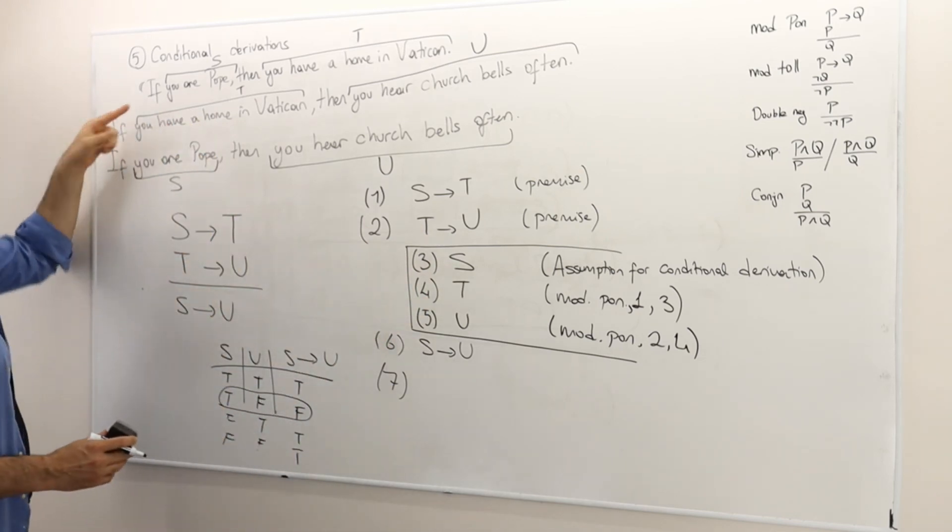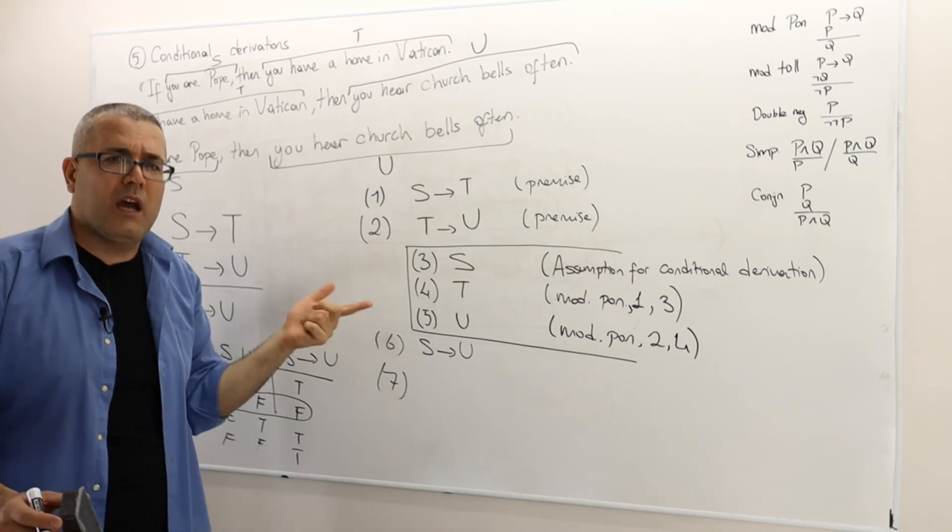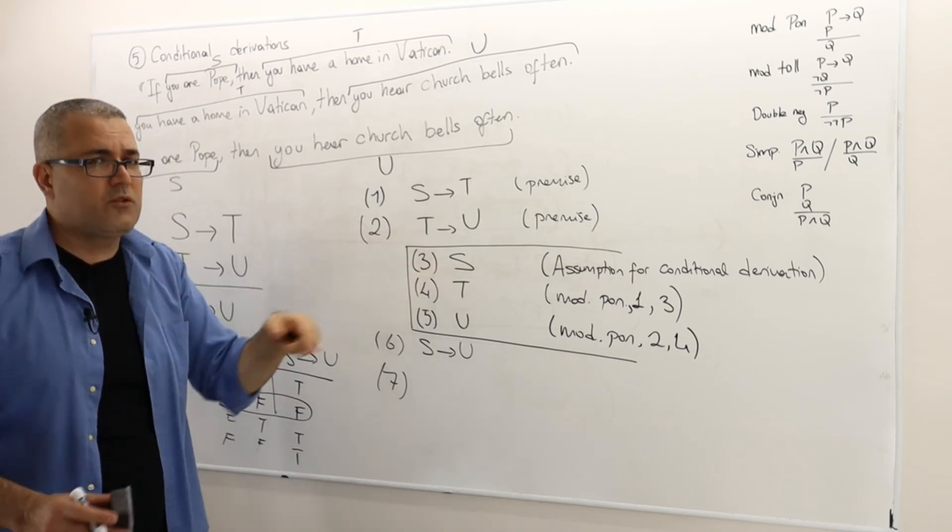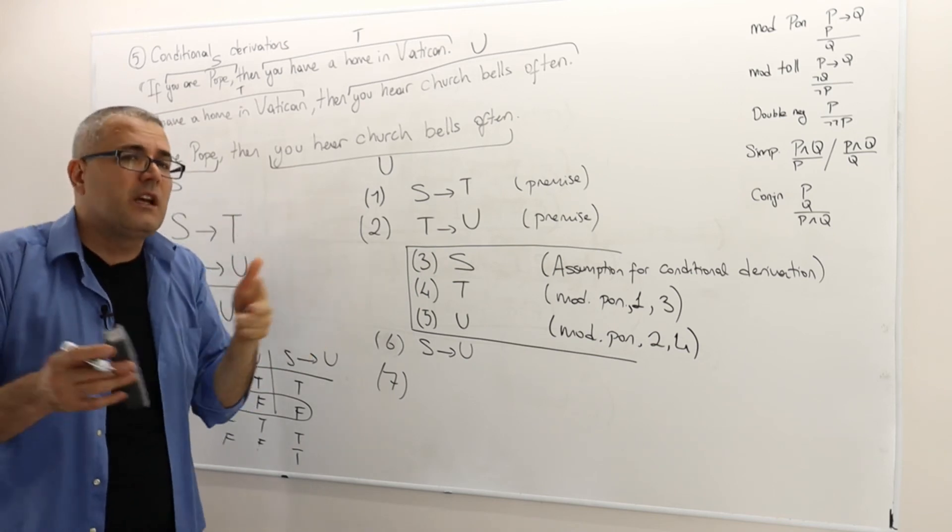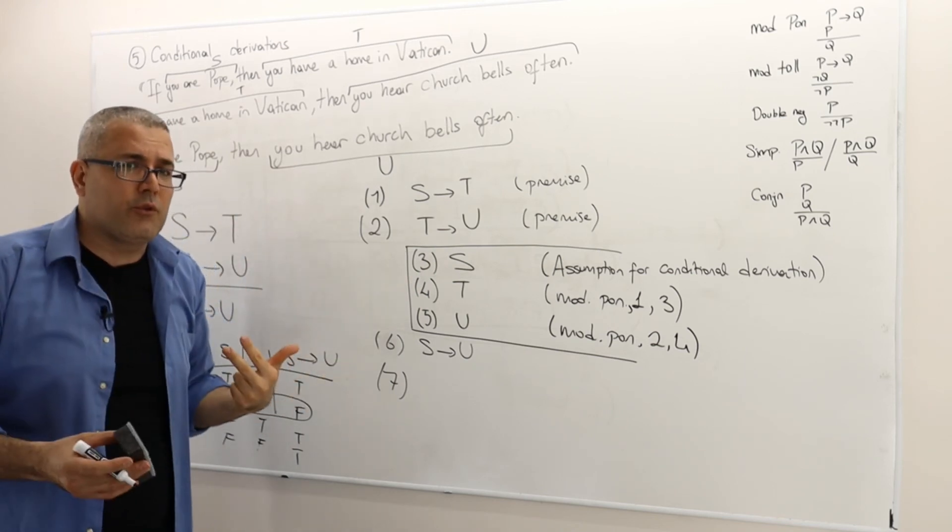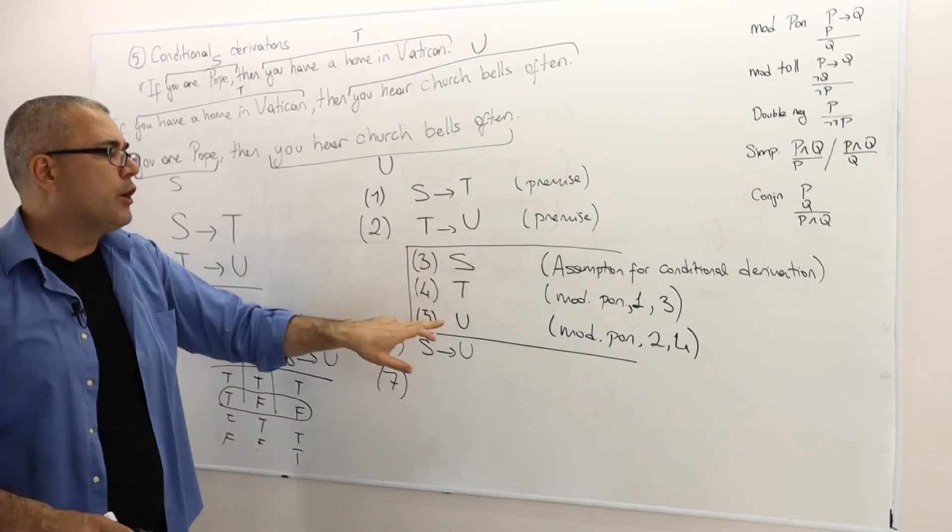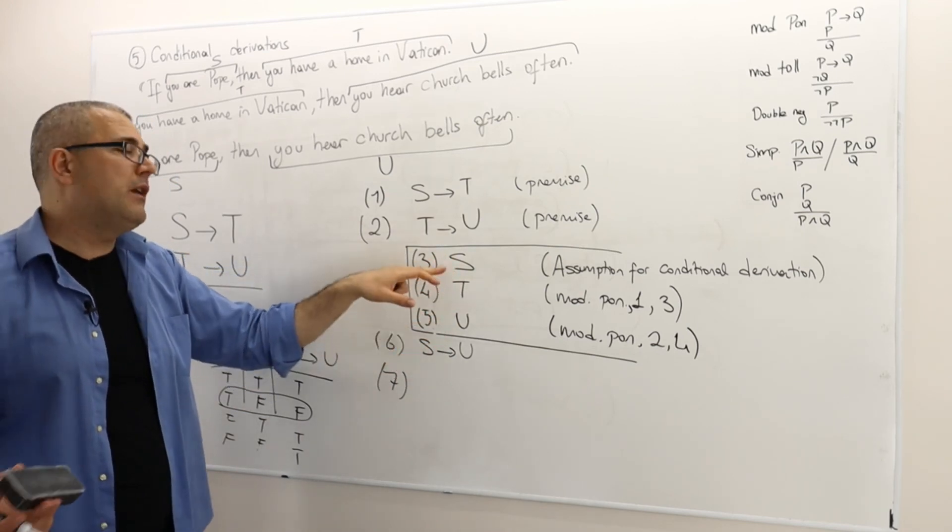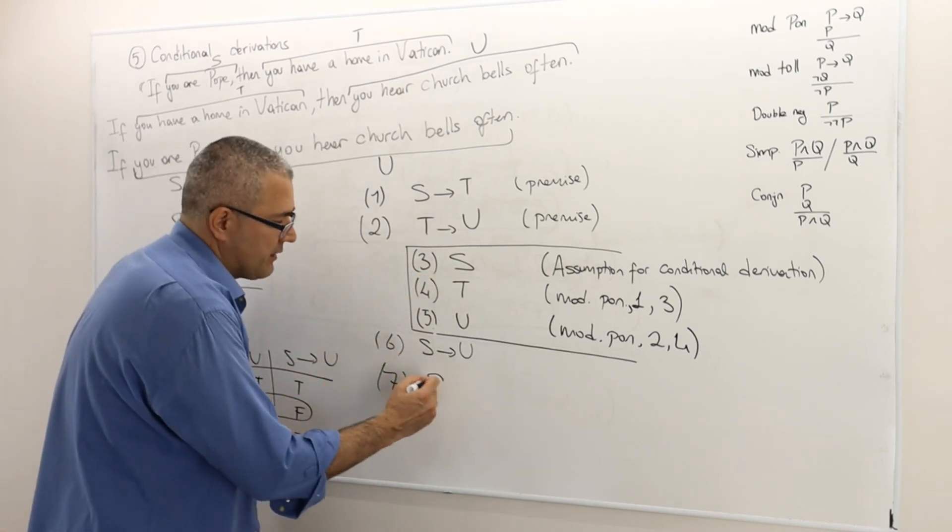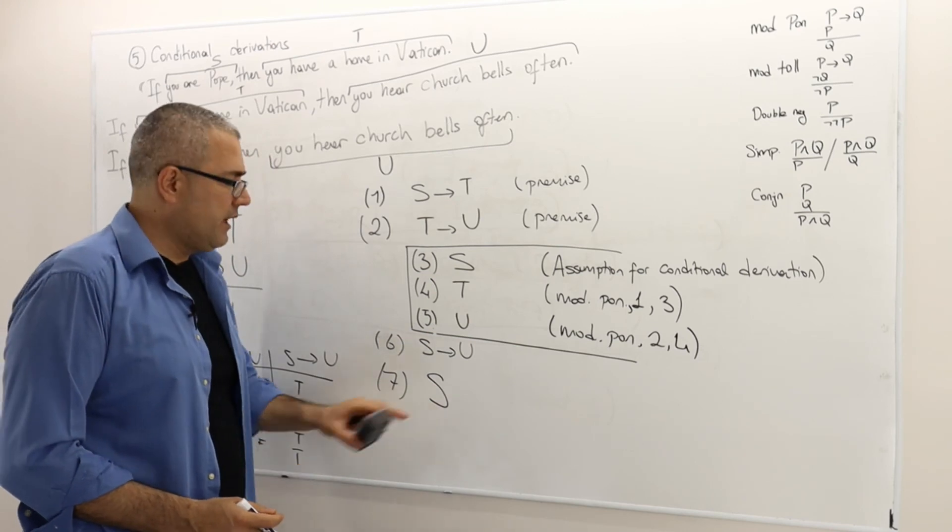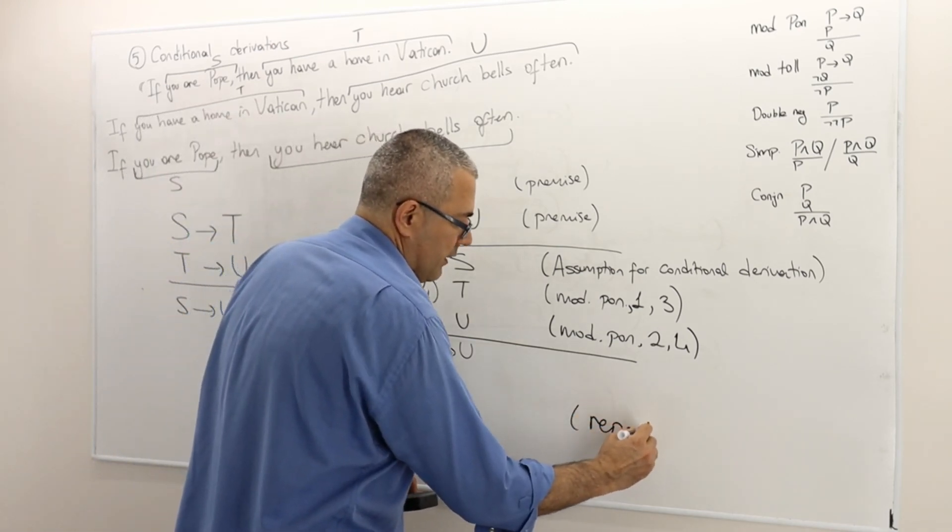I mean, S doesn't have to be true, right? In fact, S is you are Pope. Are you the Pope? No, you're not. So therefore, S is actually not true in this specific example. And so in general, it may or may not be true. Here, what I shown is if S is true, U must be true, but maybe S is wrong or false. So therefore, I cannot, for example, say line seven: S repeat line three. I can't do that.